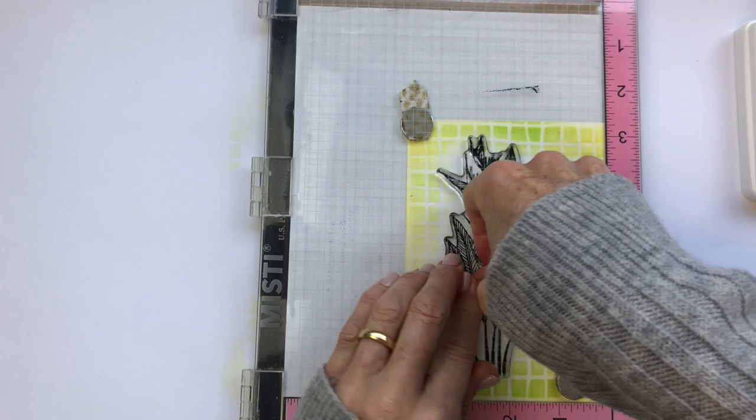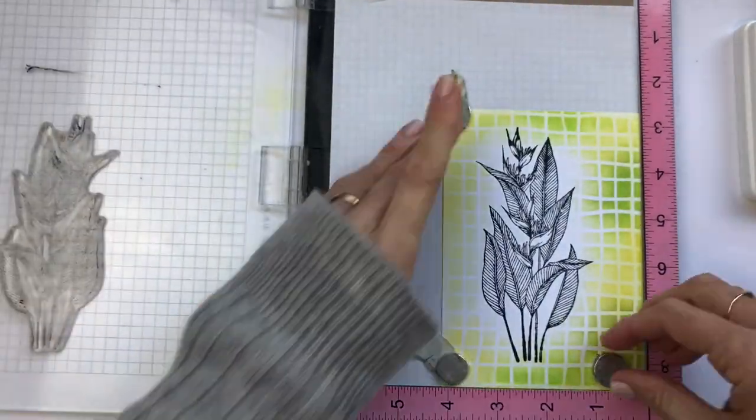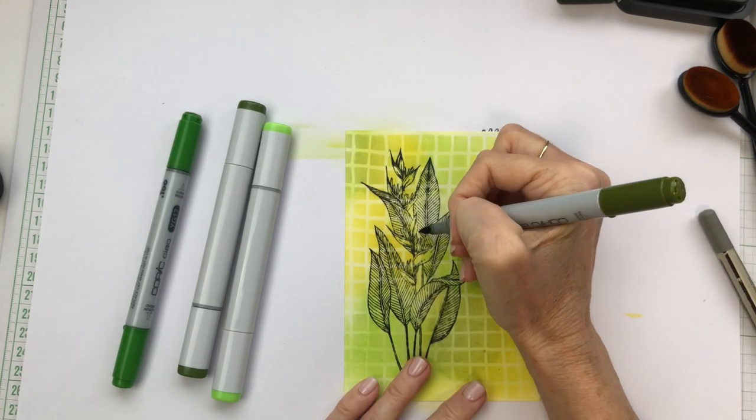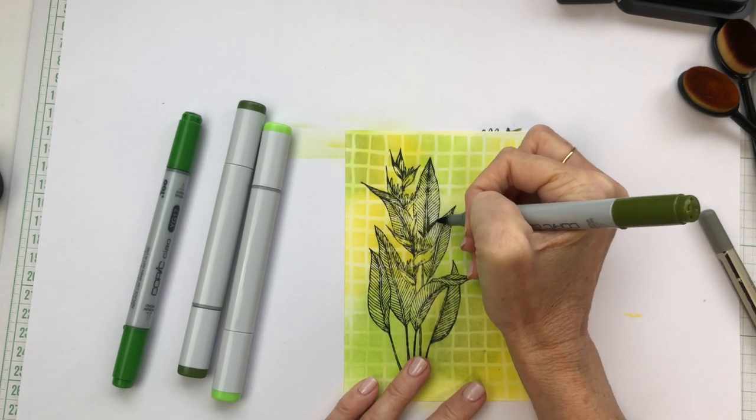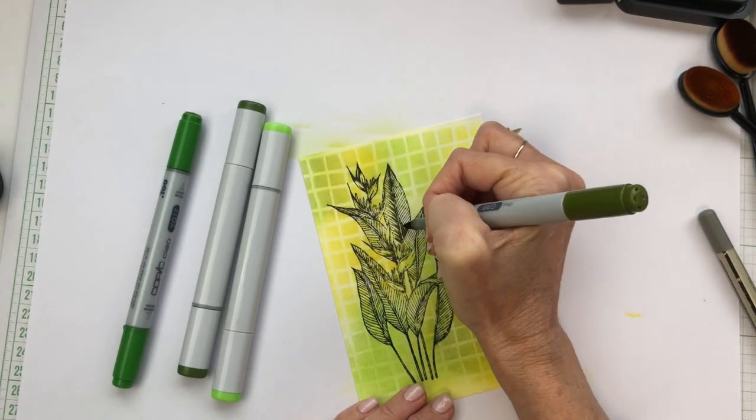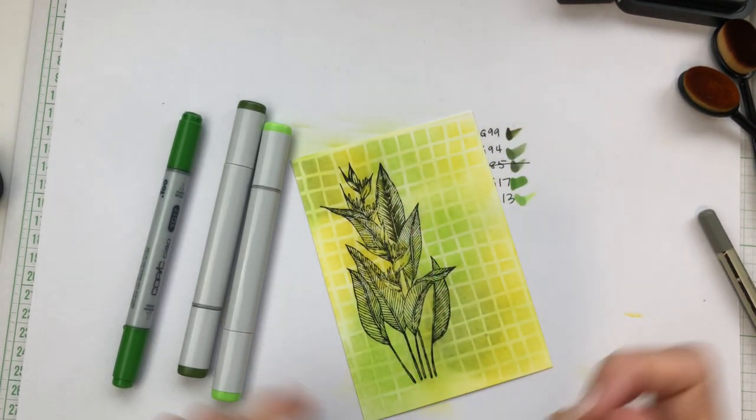Once I've finished stamping this, through the magic of video editing we're going to switch now to another image that I've inkblended onto as well. You can see that for this image I've inkblended the darker colors towards the image and faded out to the outside, quite opposite to the panel that we just made together.